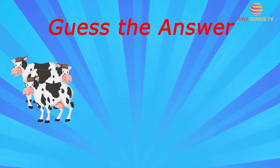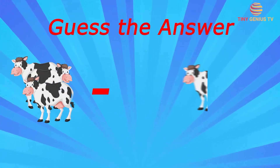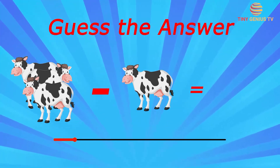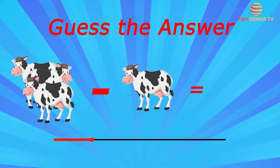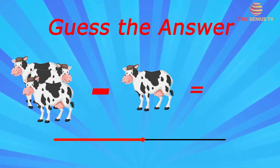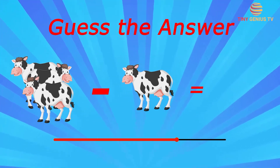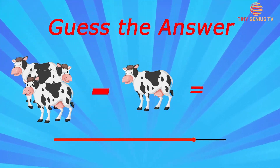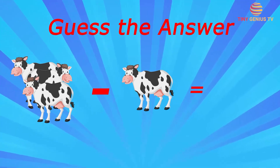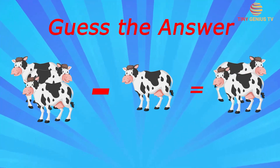There are three cows in a farm. One of them is not sleeping and two cows are sleeping. Now how many cows are sleeping? Two cows are sleeping.